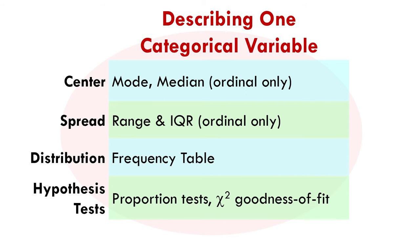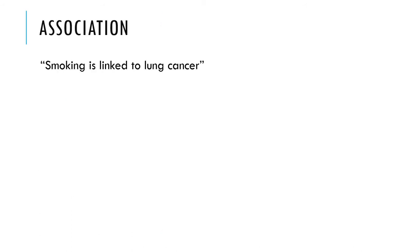We've been focusing on a single variable, except for t-tests and ANOVA, which include two variables. But let's talk about association now. Association requires two variables. It's to test association between two categorical variables.